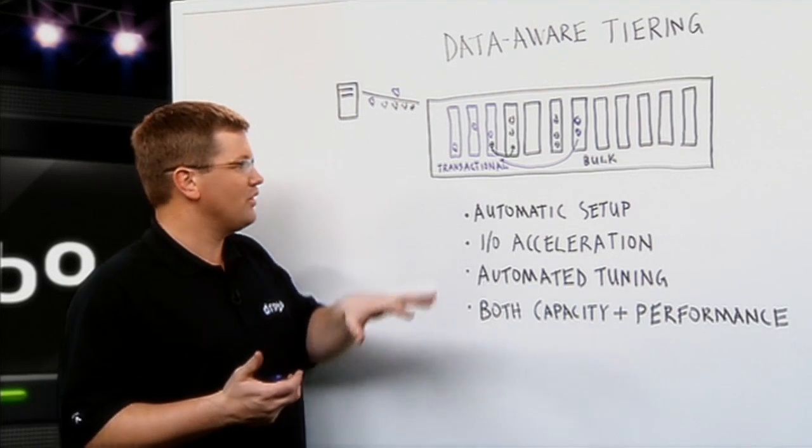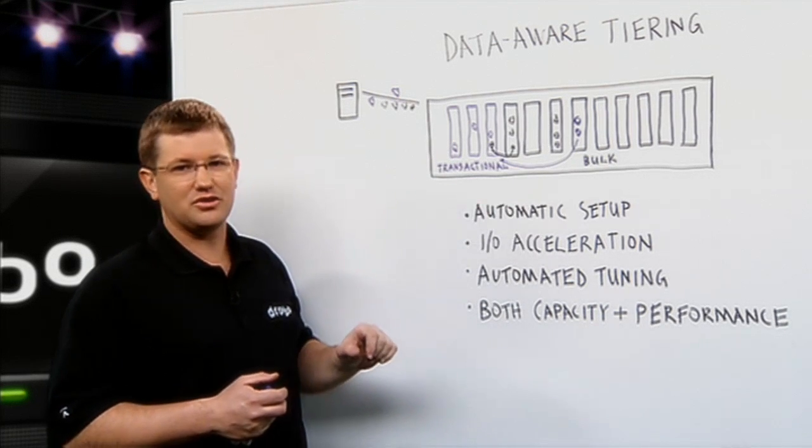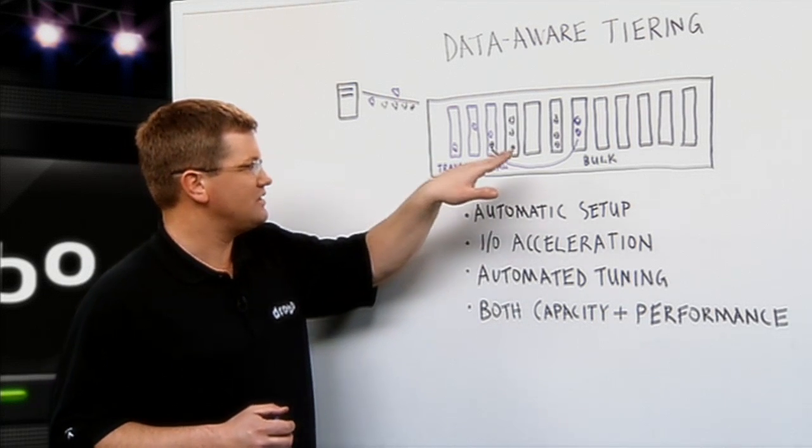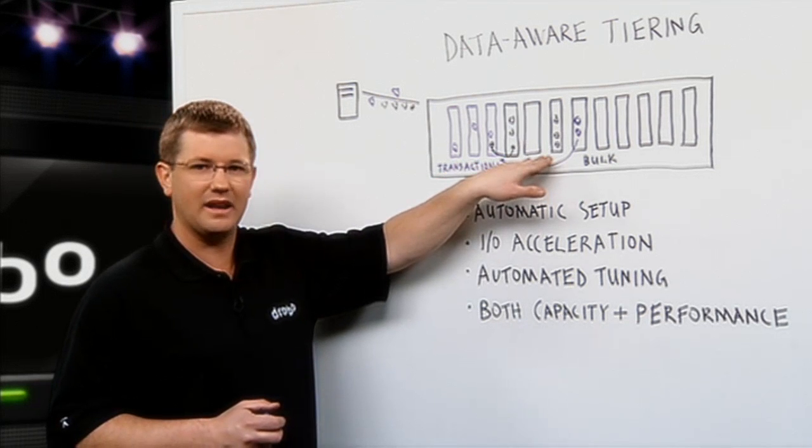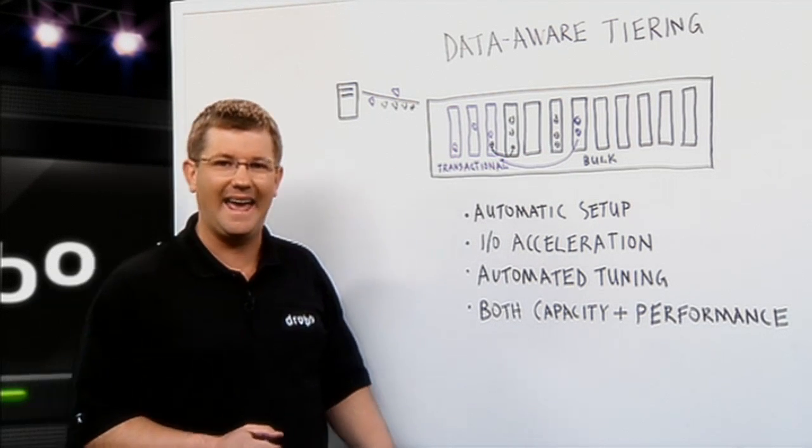One of the values of the Drobo is we only need a few SSDs. It complements the hard disk drives. So in the end, what you get is very high capacity because you still retain a lot of hard disk drives, and you get the performance of SSDs. So you get both capacity and performance.